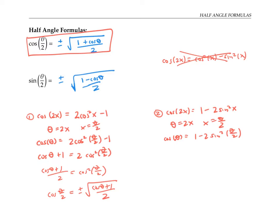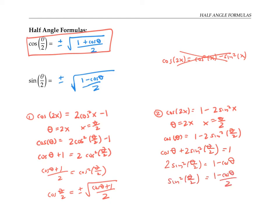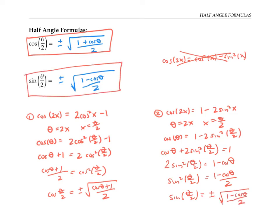Now I'll solve for sine of theta over two. I'll start by adding two sine squared theta over two to both sides. Next, I'll subtract cosine theta from both sides. Then I'll divide both sides by two, and finally take the square root of both sides. That gives me sine of theta over two is plus or minus the square root of one minus cosine theta over two, which is the formula I was looking for.